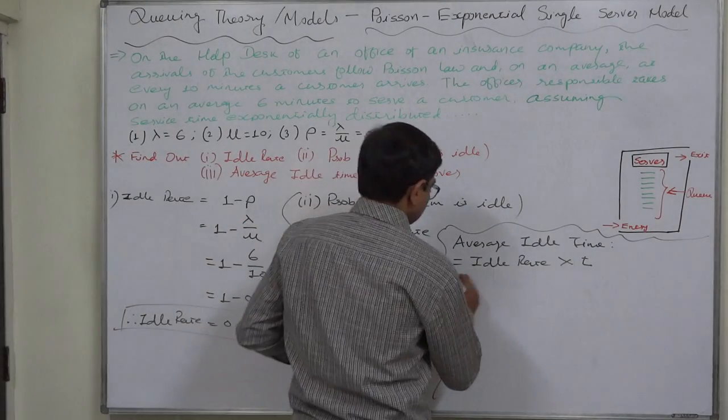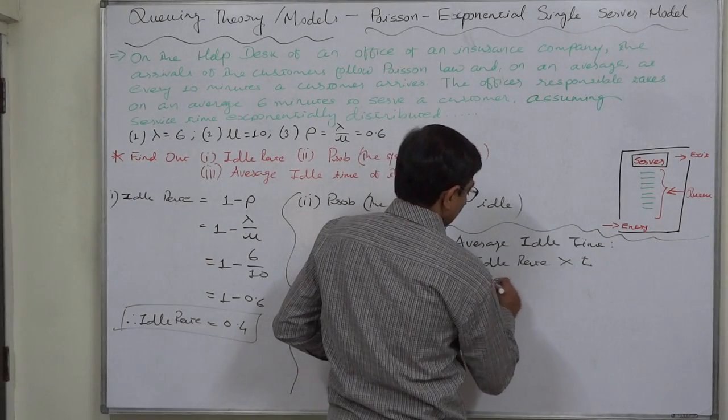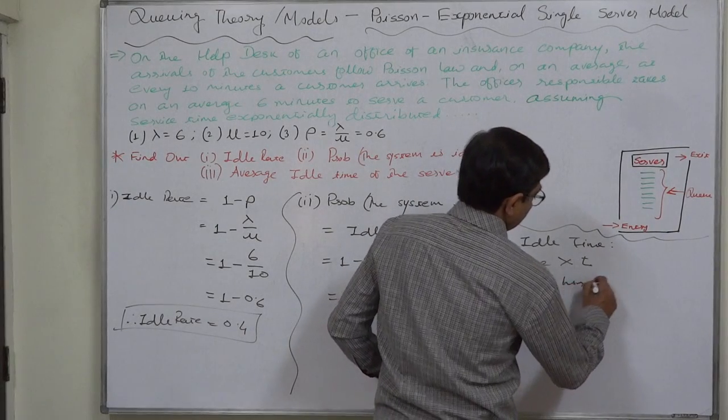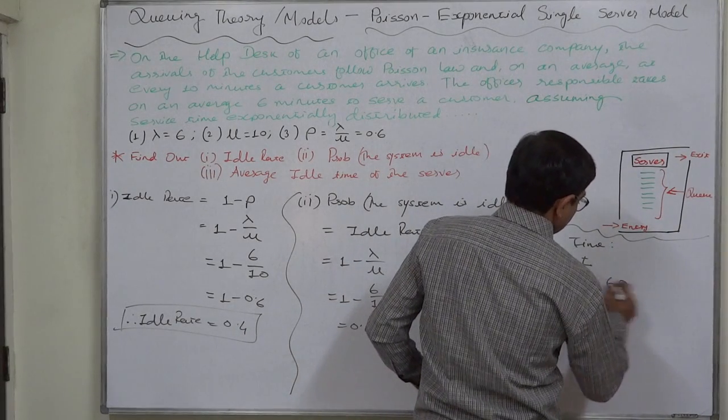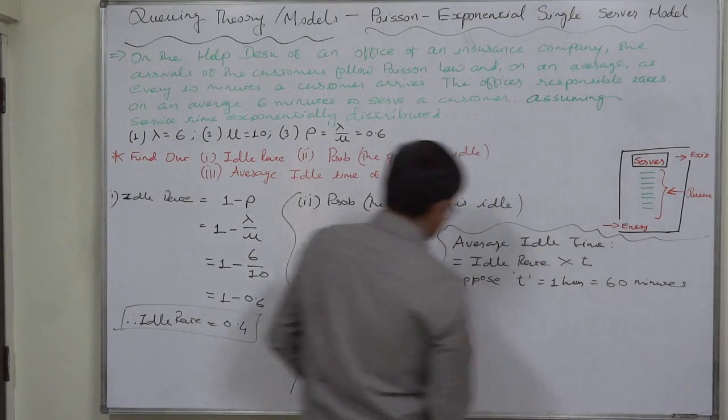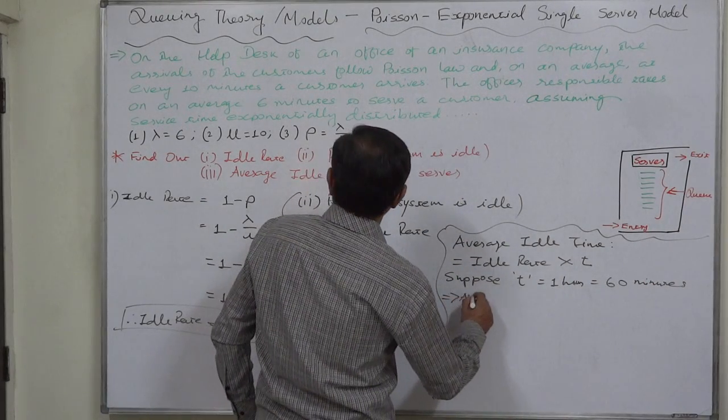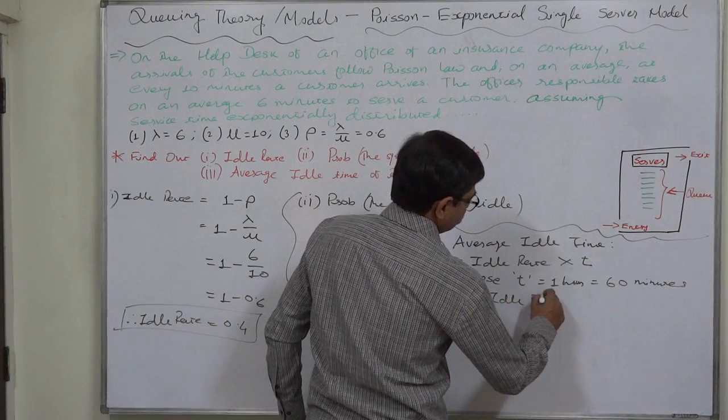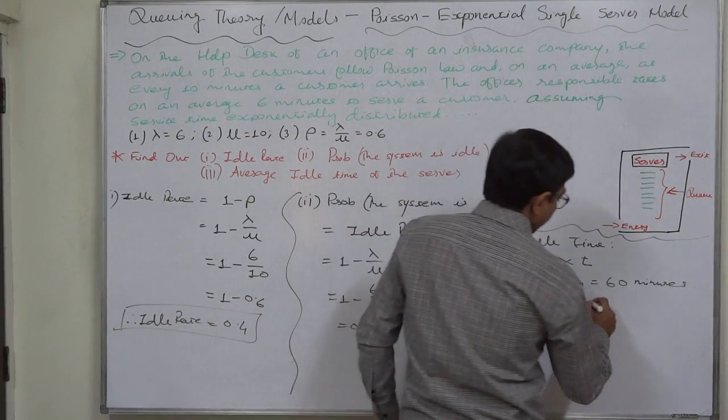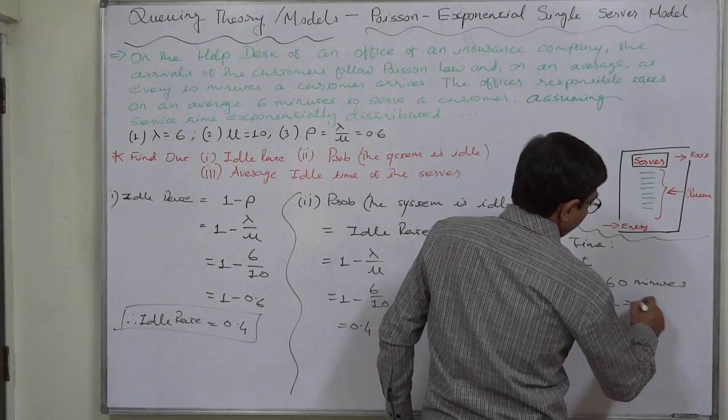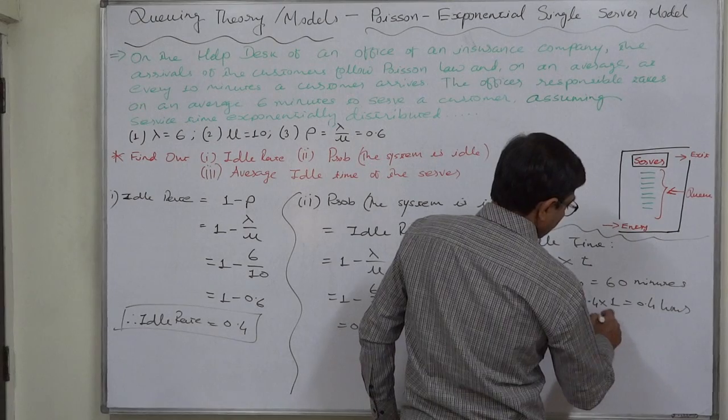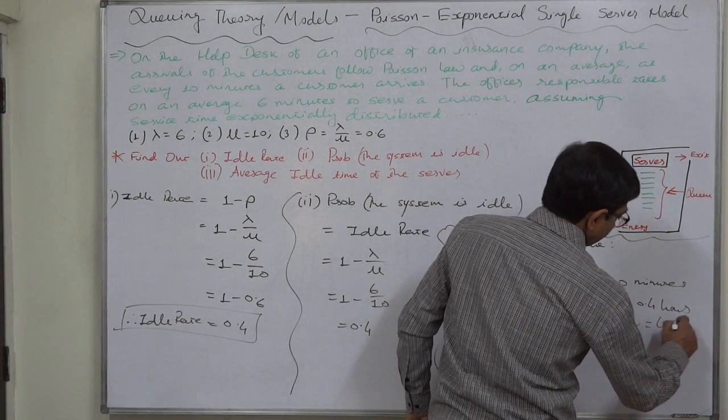Suppose T equals 1 hour, that is 60 minutes. Then, average idle time will be 0.4 into 1, that is 0.4 hour or 0.4 into 60 minutes, that is 24 minutes.